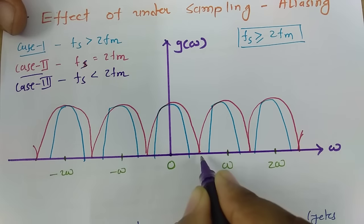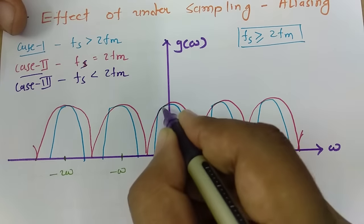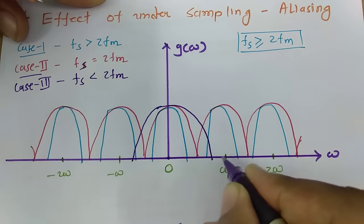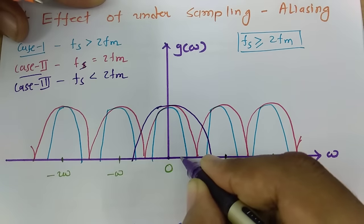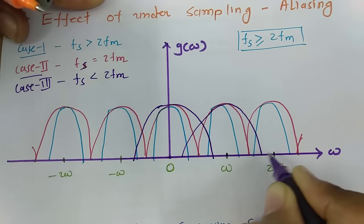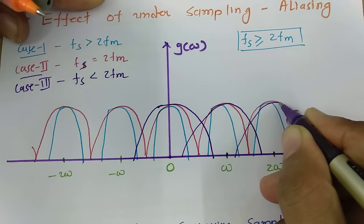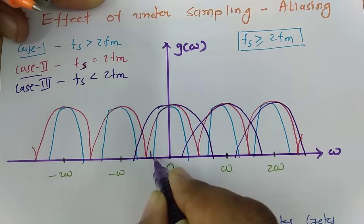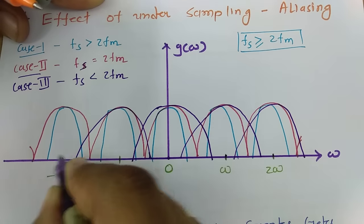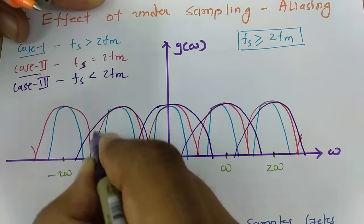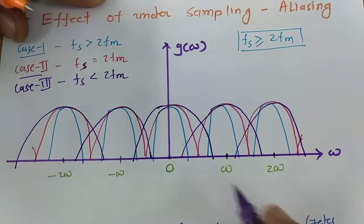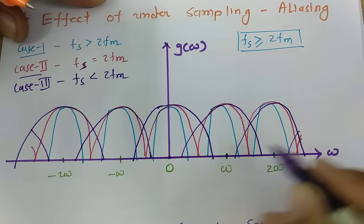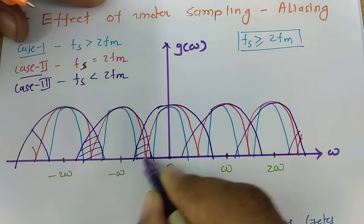As fm increases up to a certain point, the samples extend and overlap in this manner. Similarly, on the negative side, the samples increase and overlap in the same way, resulting in overlapping regions between consecutive samples.